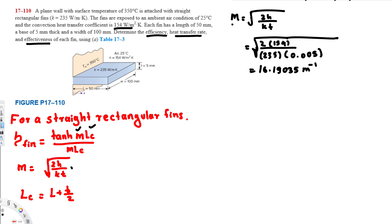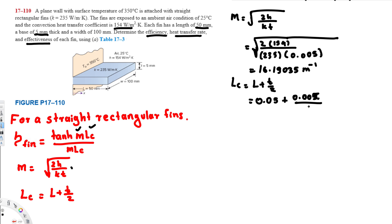Now we find the corrected length LC. The corrected length is L plus thickness divided by 2. The fin length is 50 millimeters, which is 0.05 meters, and thickness is 5 millimeters, which is 0.005 meters. So LC equals 0.05 plus 0.005 divided by 2, giving LC equals 0.0525 meters.